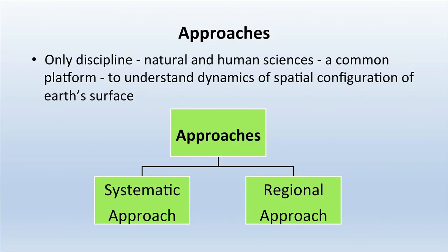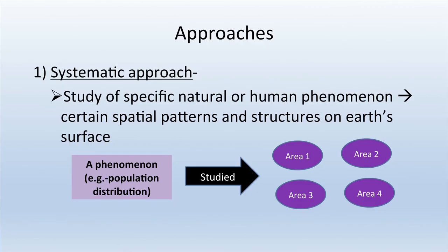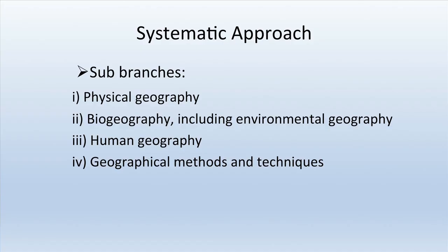What are the approaches mainly followed in geography? This is the only discipline where natural and human sciences come on a common platform to understand the dynamics of spatial configuration of the earth surface. There are two main approaches: the systematic approach and the regional approach. In the systematic approach, we study one aspect across all places — for example, if studying population, we study it across the entire world or country. It is the study of specific natural or human phenomena with certain spatial patterns and structures.